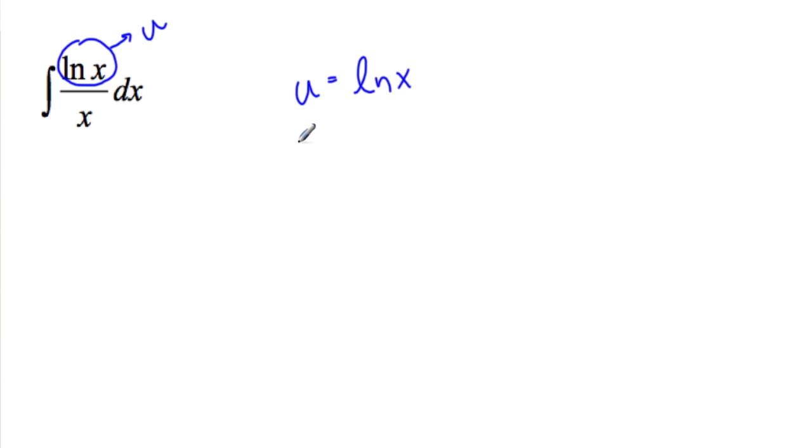and then du over dx equals 1 over x, multiplied by dx all the time. Most people don't write this step here, but I think it helps you understand where that dx notation is coming from. So du equals 1 over x dx,